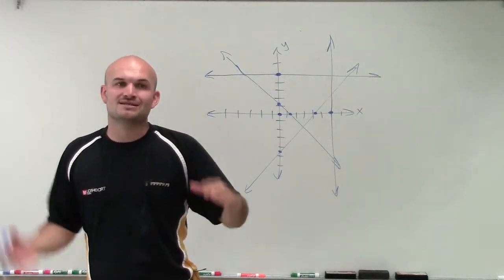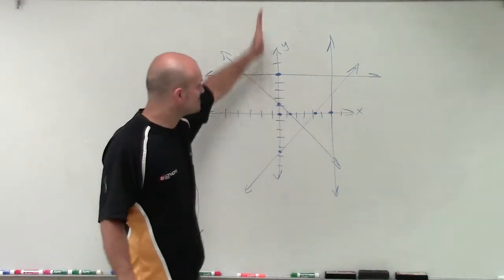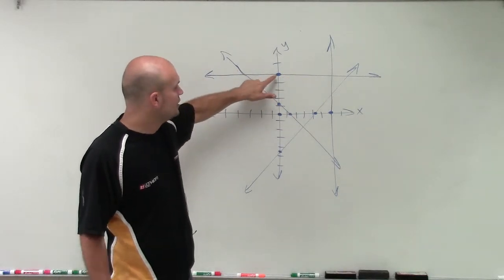And remember, wherever the intercept is, that is where your graph is going to cross either the x-axis or the y-axis. And if they cross at an interval point, you can name that.